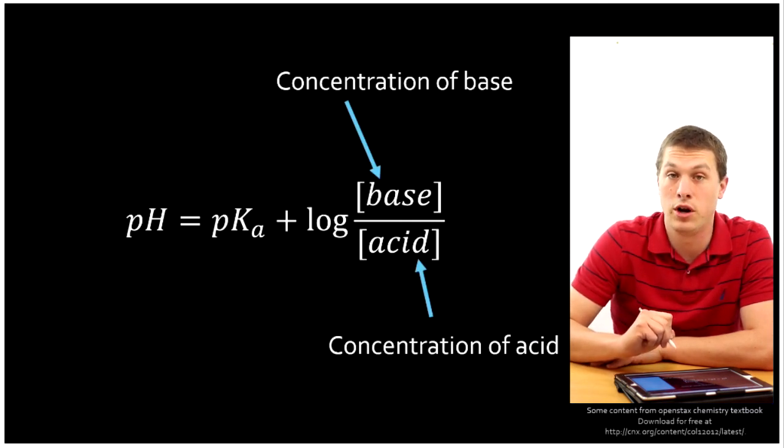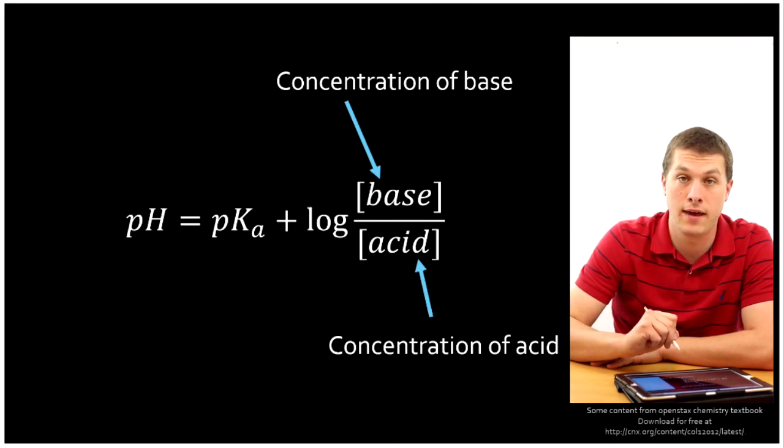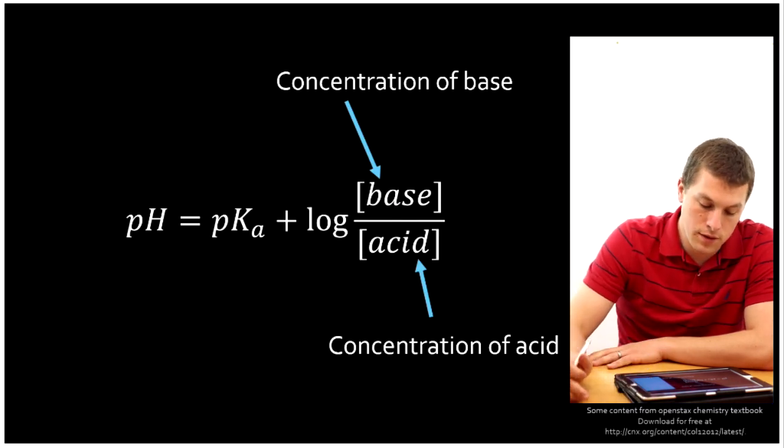In a problem where you're asked to calculate the pH of a buffer, you'll usually be given the Ka, the concentration of your acid, and the concentration of your base, which makes this a pretty straightforward problem type. So let's do an example.